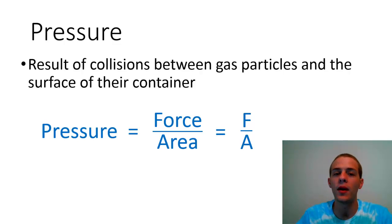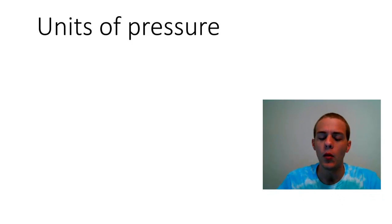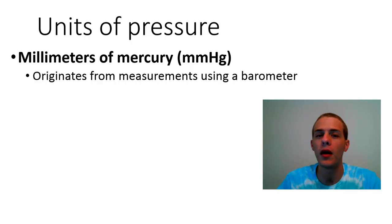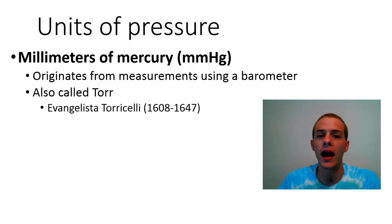In the next couple of slides we're going to talk about some of the most common units of pressure, and there are quite a few of them. One of the most common units of pressure is millimeters of mercury, or mmHg, and the millimeter of mercury is a unit that originates from how pressure measurements are made using a barometer. Millimeters of mercury also go by another name, and those are called Torr, and that's named after the guy who invented the barometer, Evangelista Torricelli. So mmHg and Torr are both the same thing, therefore one mmHg is equal to exactly one Torr.